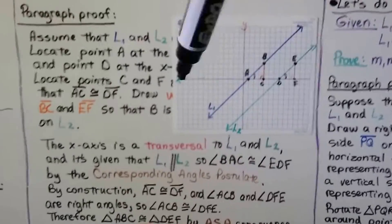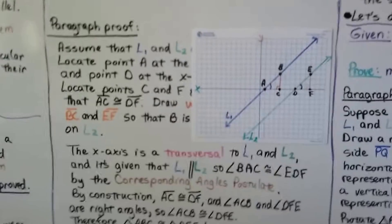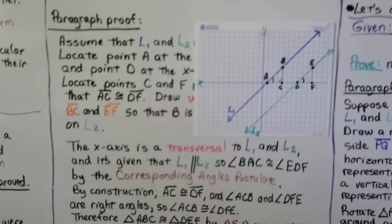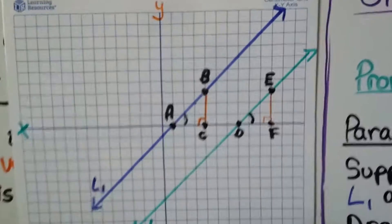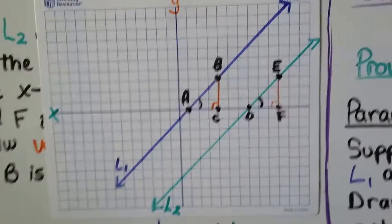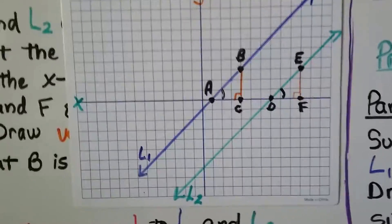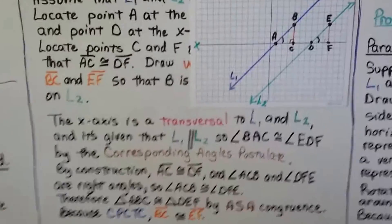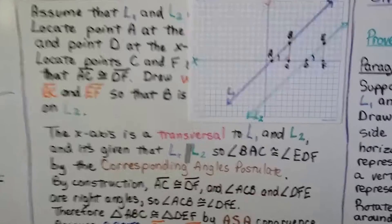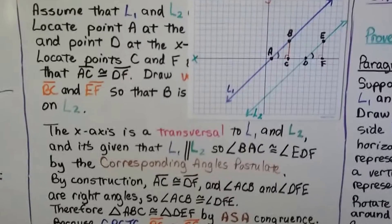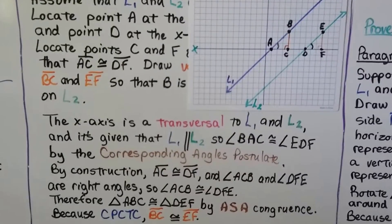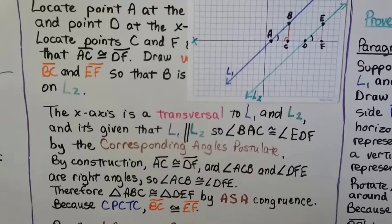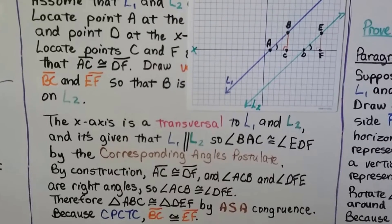The x-axis is a transversal to l sub 1 and l sub 2. Since the first line is parallel to the second line, angle BAC is congruent to angle EDF — those are corresponding angles by the Corresponding Angles Postulate, both above the transversal and on the right side of their lines. By construction, segment AC is congruent to segment DF. Angles ACB and DFE are both right angles, so they are congruent. Therefore, triangle ABC is congruent to triangle DEF by ASA (angle-side-angle) congruence.